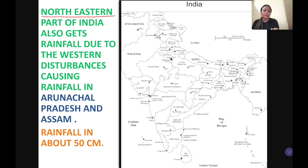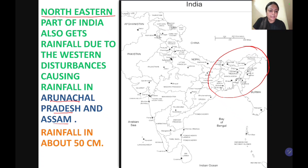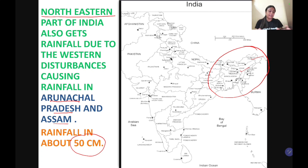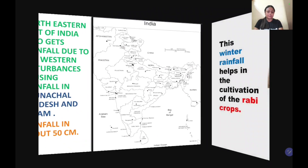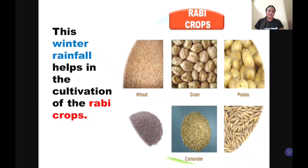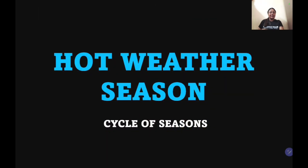The northeastern part also gets rainfall — in Arunachal Pradesh and Assam — and this rainfall is about 50 cm. So this winter rainfall in the northwest is caused by western disturbances, while rainfall in South India is caused by the Northeast monsoon. This winter rainfall is very beneficial for rabi crops, a good example of which is wheat.